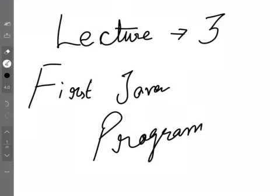Hi all, this is Anjali and this is lecture 3 for the Java code course. Here we'll discuss how to make the first Java program. In the first two videos we discussed Java features and why Java is called a pure object-oriented language. Now we will discuss how to make Java's basic program which will print the Hello World thing.